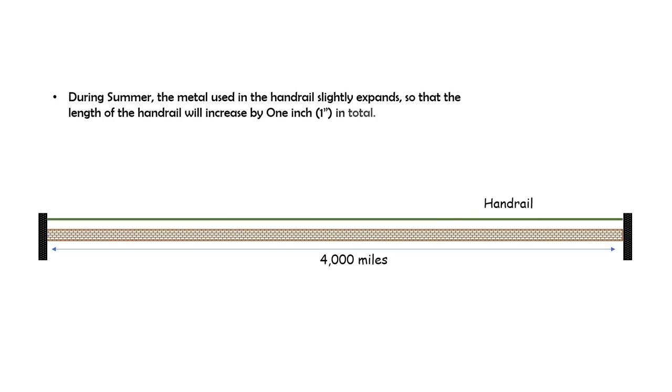During summer, the metal used in the handrail slightly expands so that the length of the handrail will increase by 1 inch in total - just 1 inch increment in a length of 4000 miles. Consider that the ends are fixed, so when the handrail expands in summer, it buckles upward at its center point.